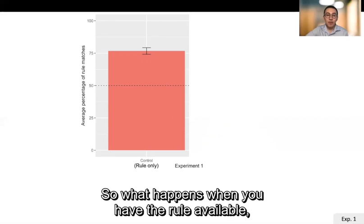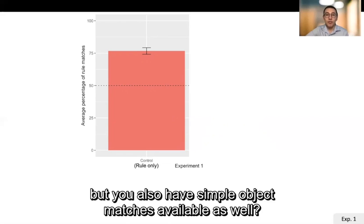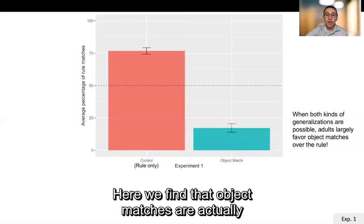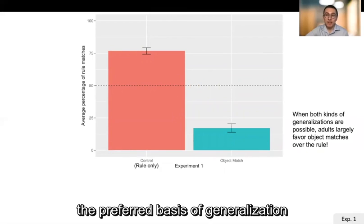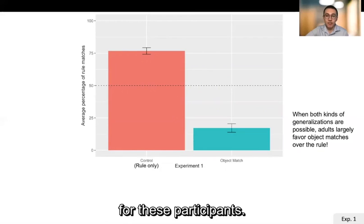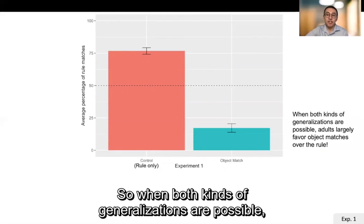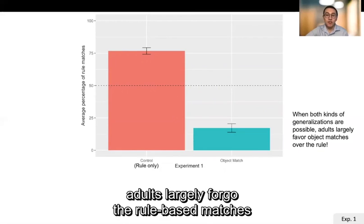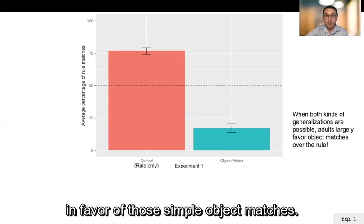But what happens when there is a viable alternative option? So what happens when you have the rule available but you also have simple object matches available as well. Here we find that object matches are actually the preferred basis of generalization for these participants so when both kinds of generalizations are possible adults largely forgo the rule based matches in favor of those simple object matches.